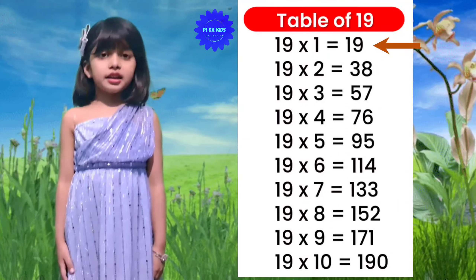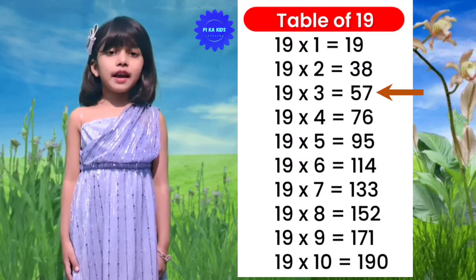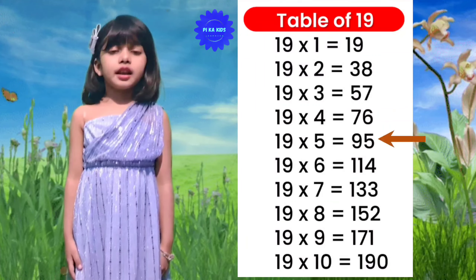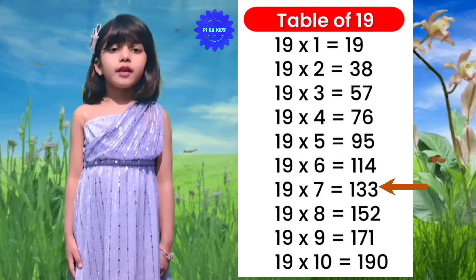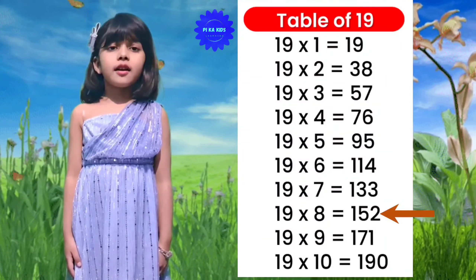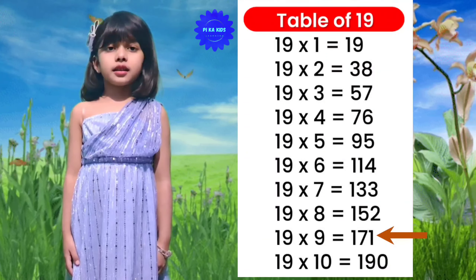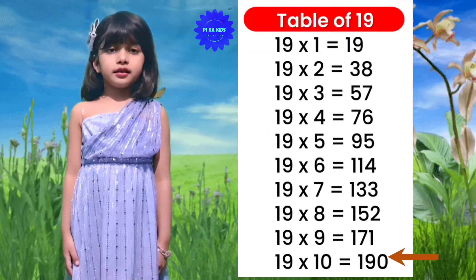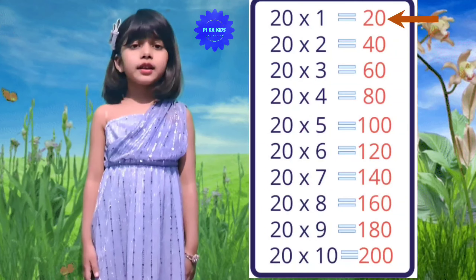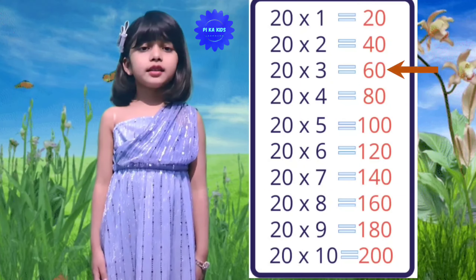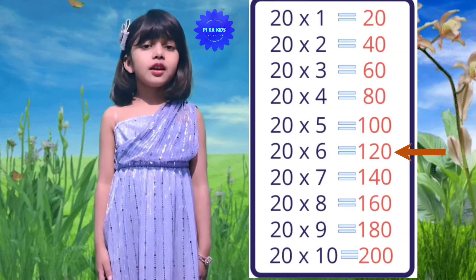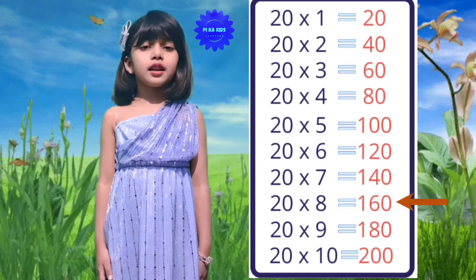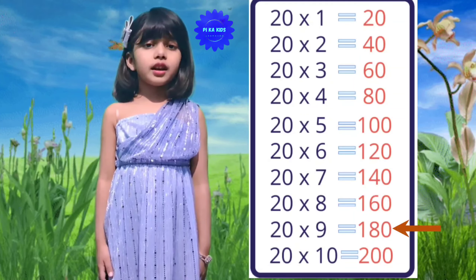Table of 19: 19 ones are 19, 19 twos are 38, 19 threes are 57, 19 fours are 76, 19 fives are 95, 19 sixes are 114, 19 sevens are 133, 19 eights are 152, 19 nines are 171, 19 tens are 190.